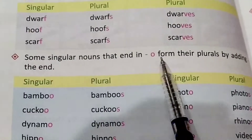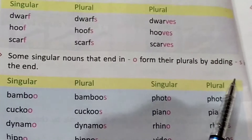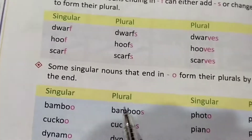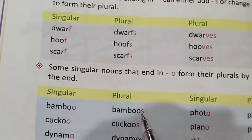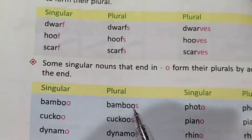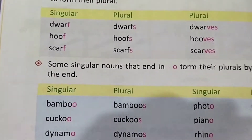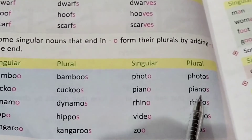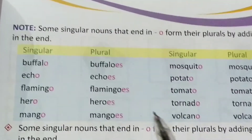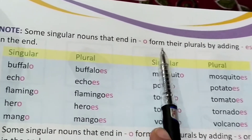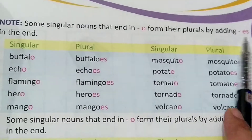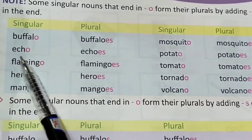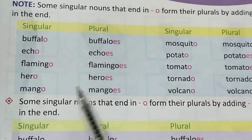Some singular nouns ending in -o form their plural by adding -s. For example: hippo → hippos, photo → photos, piano → pianos. Other nouns ending in -o form their plural by adding -es. For example: echo → echoes, hero → heroes, mango → mangoes.